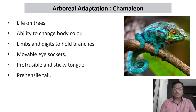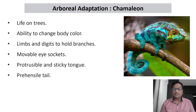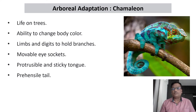Ability to change body color — its ability to change body color is protective in nature. It is very difficult to locate a chameleon because it will change its body color to the background coloration. Limbs and digits to hold branches — all animals adapted for life on the tree, whether birds, chameleon, or mammals like monkeys, chimps, and orangutan, have their limbs and digits designed for holding branches.